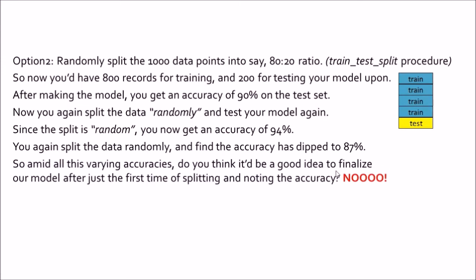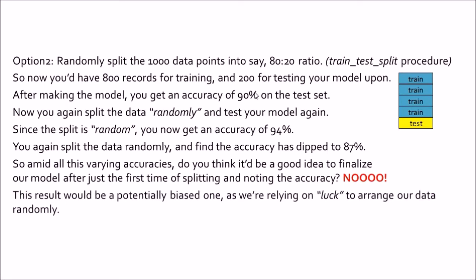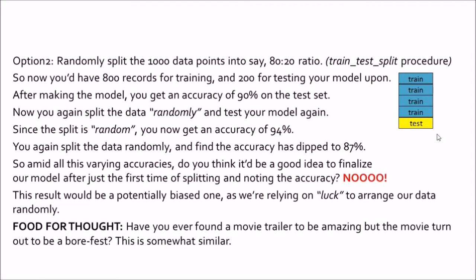Amid all these varying accuracies, would it be a good idea to finalize our model after just the first split with 90% accuracy? No — this result is potentially biased because we are basically relying on luck to arrange our data randomly. Just a small food for thought: have you ever found a movie trailer to be absolutely amazing but the movie turned out to be a complete borefest? This is somewhat similar — our testing set is basically the trailer, and the whole dataset is our whole movie. Based on this small random snippet, we cannot judge our entire data.